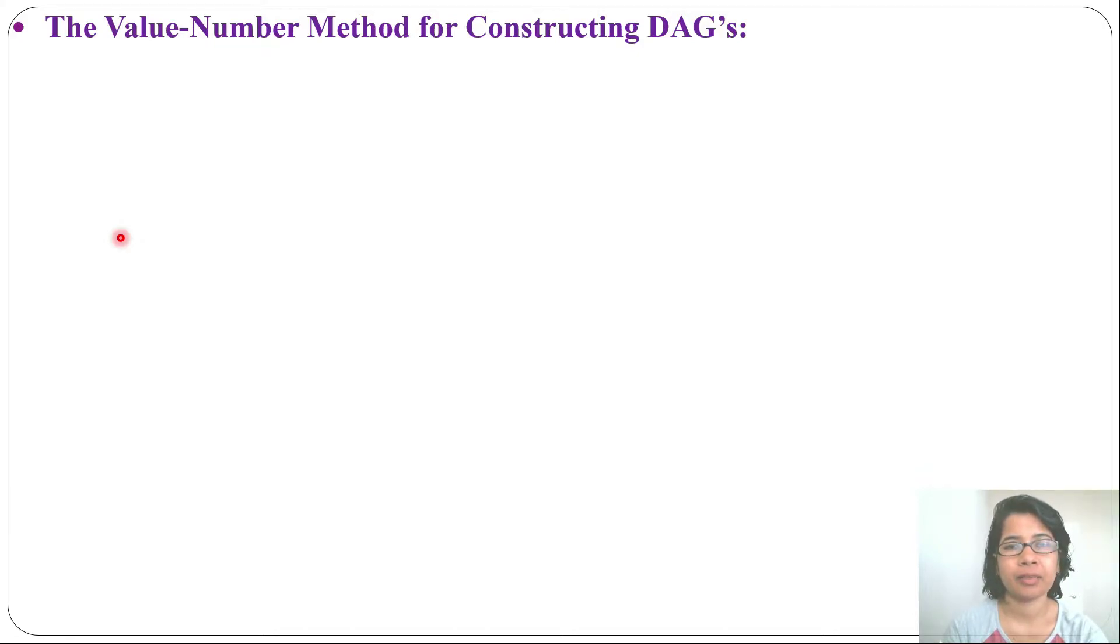I already discussed an example of DAG. Let's discuss the value number method for constructing DAG. What is value number? One number we are assigning for every node, that is called a value number. I will discuss details with example.